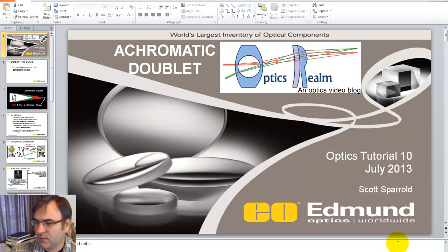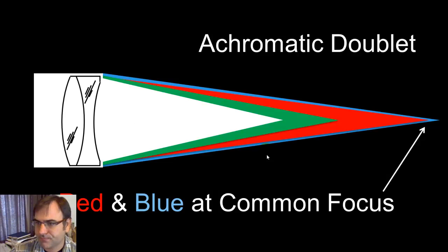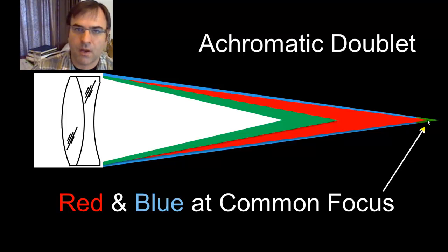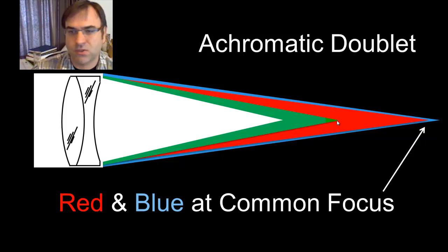The goal is to understand how an achromatic doublet works, how to solve for the focal lengths, how to build one up, and how they work. An achromatic doublet is two dissimilar optical materials that share a common focal length or common focal point for the two wavelength extremes. In the case of visible, that would be red and blue. The middle wavelength — green — is going to be defocused. That's just the nature of how these work.